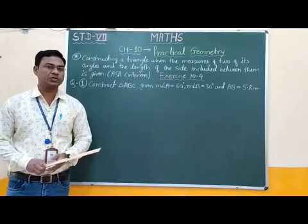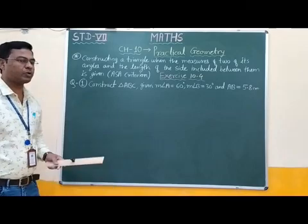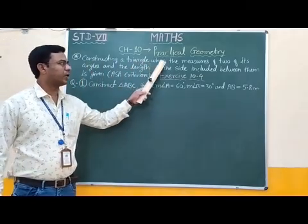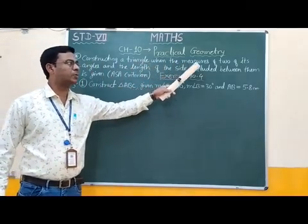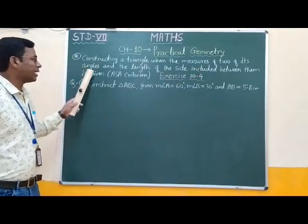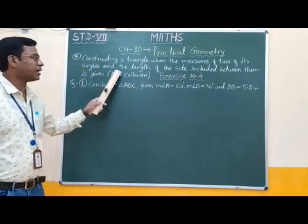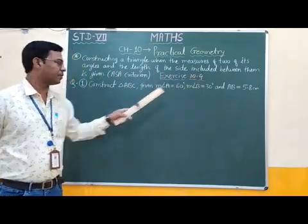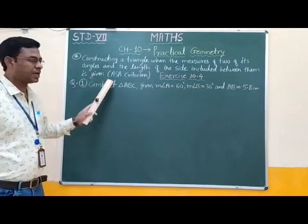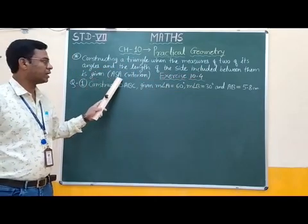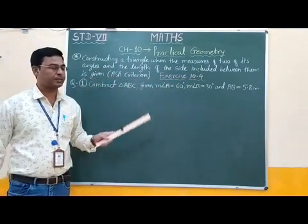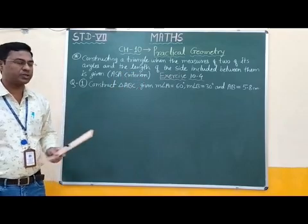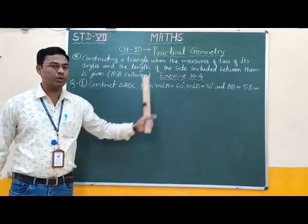Good morning students. In this video we are going to learn constructing a triangle when the measures of two of its angles and the length of the side included between them is given. That is ASA criteria. Now we are going to start Exercise 10.4.